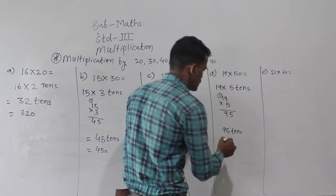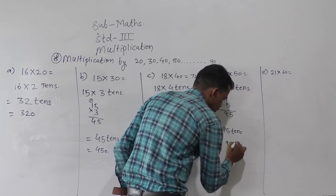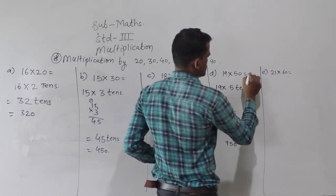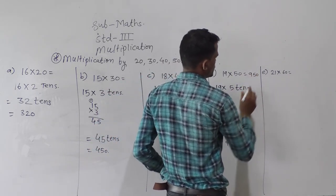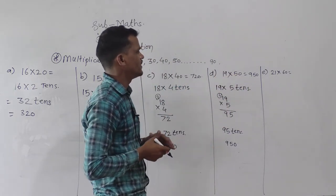So 95 tens means 950. Means 950 is the answer of this multiplication example. 19 into 50 is equal to 950.